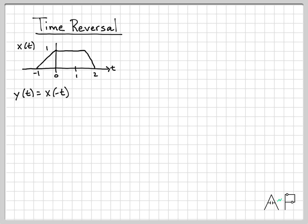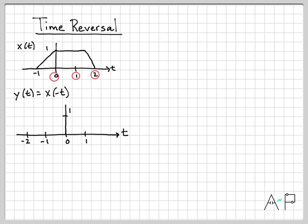One way of thinking about it is: this point at positive 2 ends up being the value at negative 2, and this value at 1.5 ends up at minus 1.5. You can point-by-point flip it from one side to the other. So let me draw my axes. The original axis went from minus 1 to 2, so on the flipped axis I want minus 2, minus 1, 0, and positive 1.